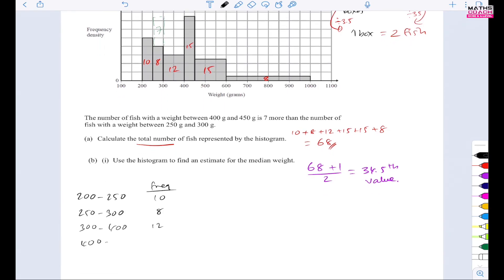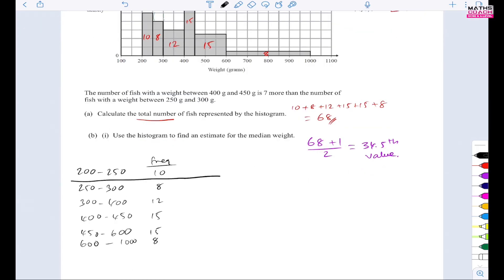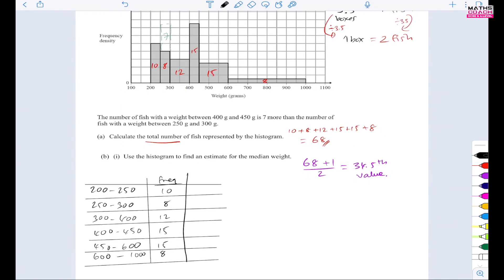And I've got 400 to 450. And the frequency for that is 15. Next, I've got 450 to 600. And the frequency for that is 15. And finally, I've got 600 to 1000. And the frequency for that is 8. So I've got all the frequencies there now. So let's just put a table around this. Just to make it a little bit neater. So there we have our table now. Now, what will I do next? I will add here the CF column. So here, he's going to have 10. I'm going to add the 8. So we get 18. Add the 12. We get 30. Add the 15. We get 45. Add the 15. We get 60. And add the 8. We get 68.